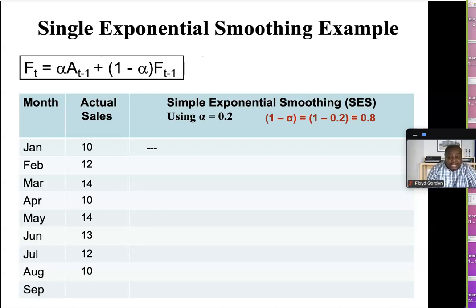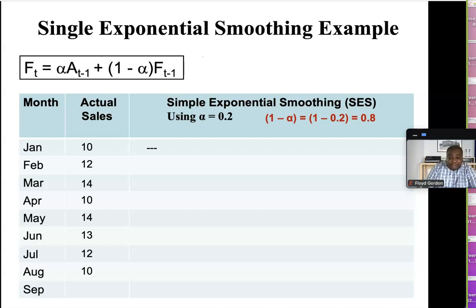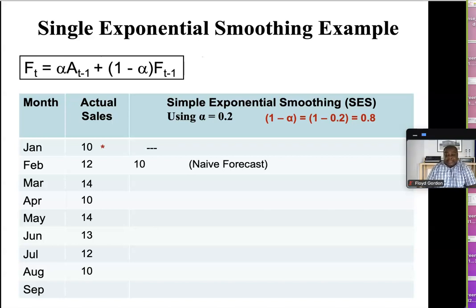Since we don't have the forecast for January, we are going to start with a naive forecast for February. The naive forecast for February says: since the actual sales for January was 10 units, we expect the actual sales for February to also be 10. So here we start with a naive forecast.